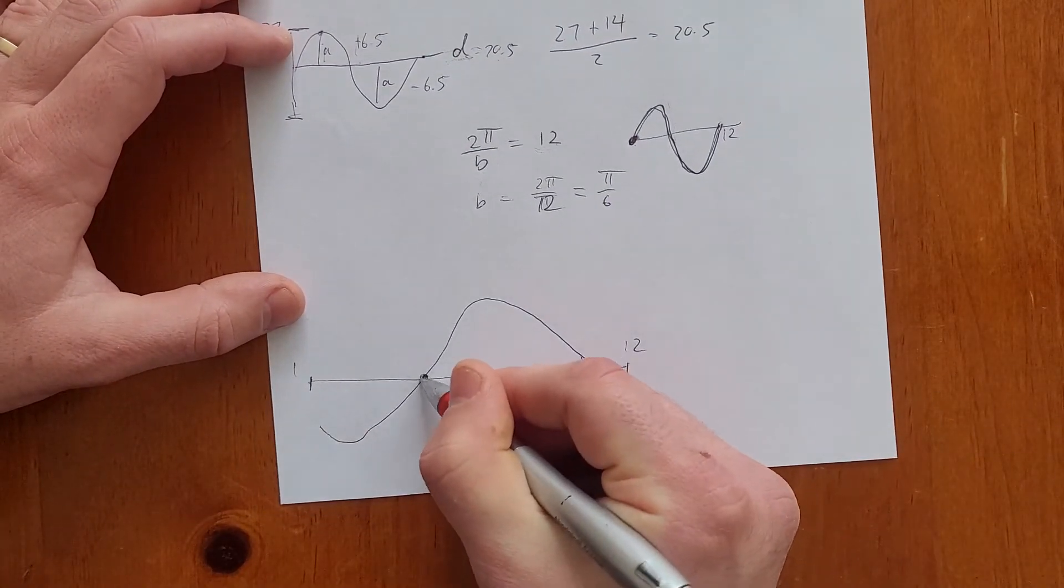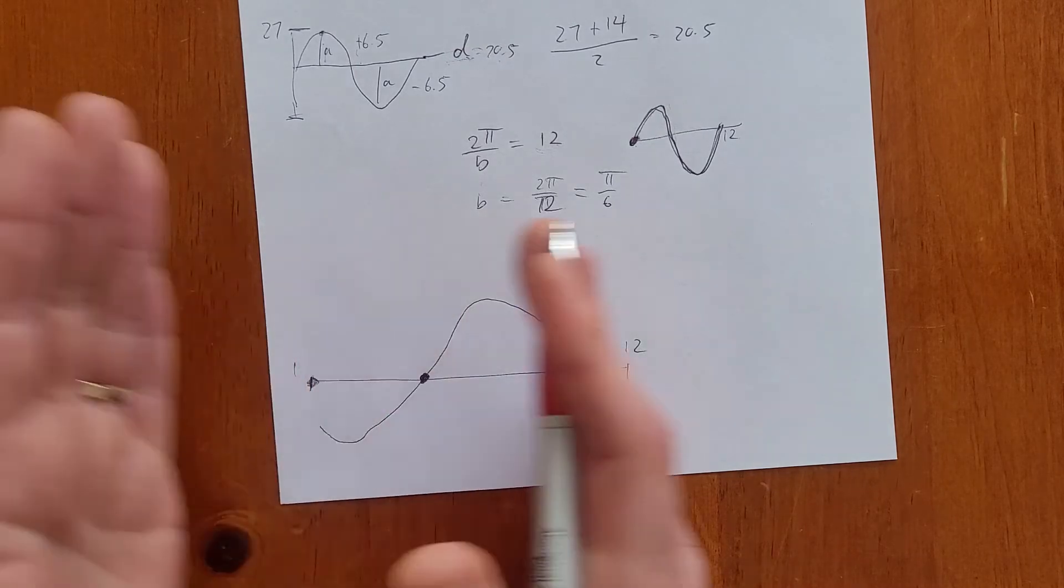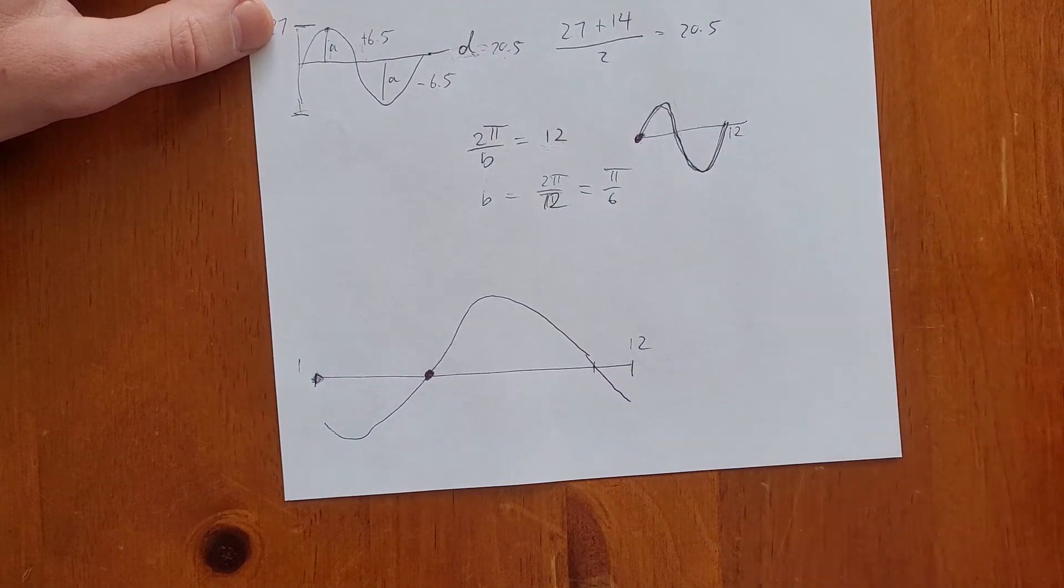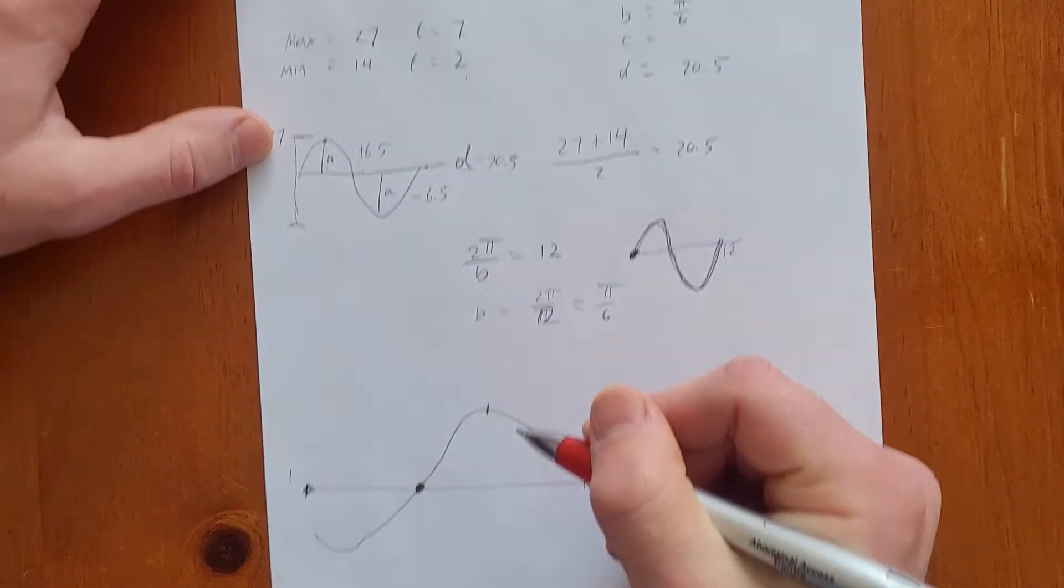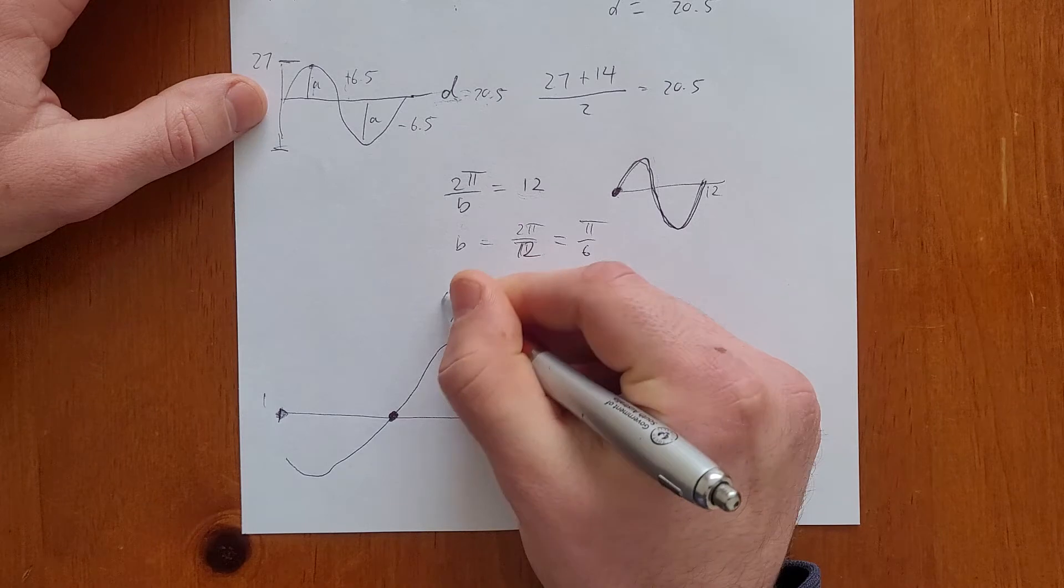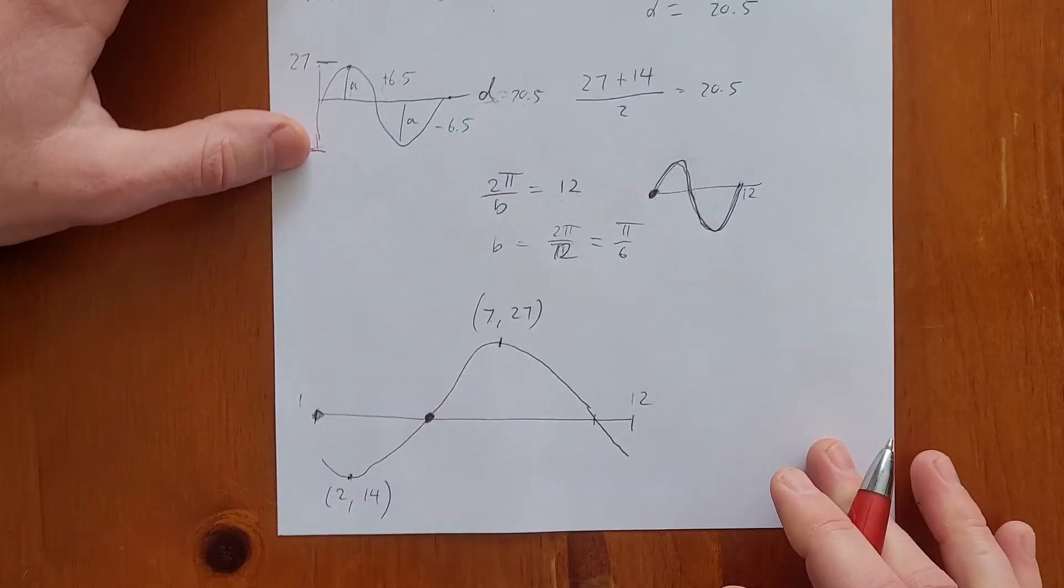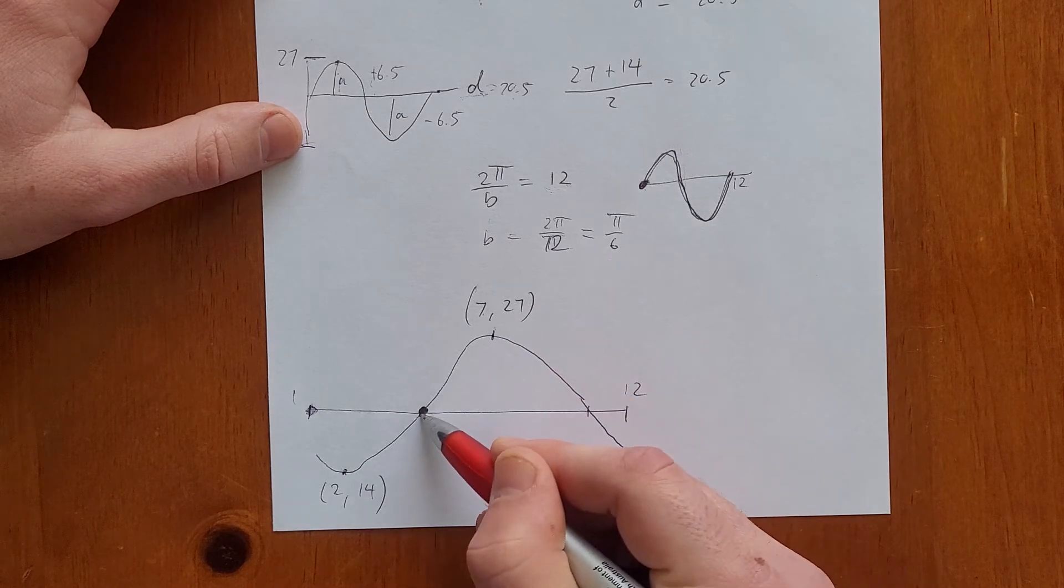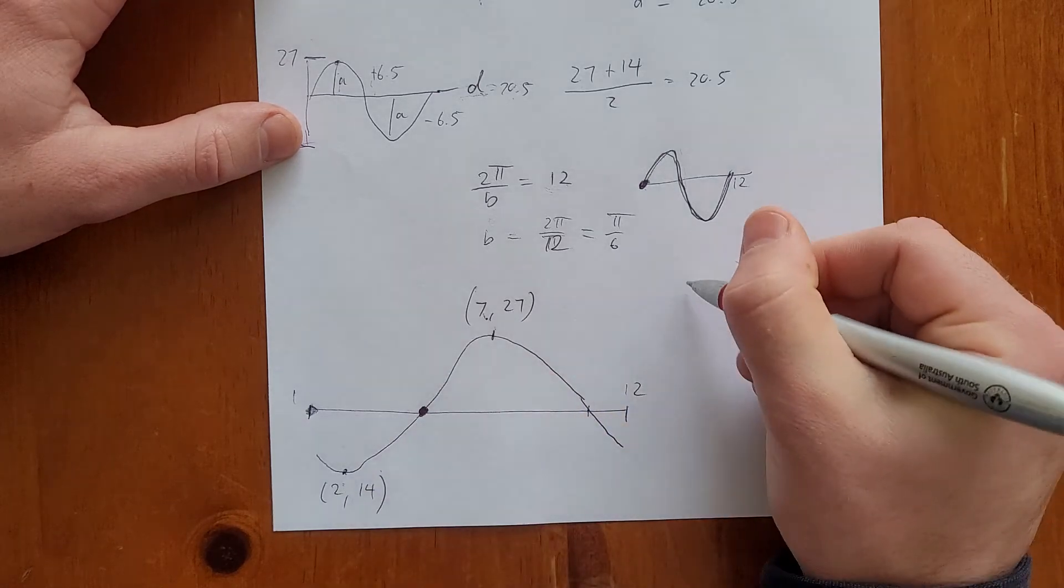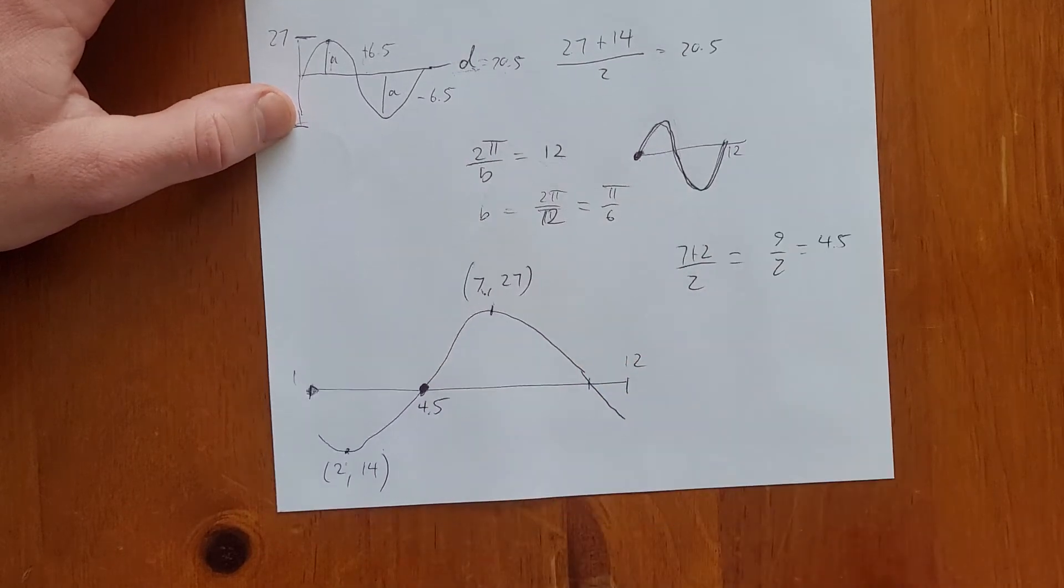Here's time is 12, here's time is 1. And so we want to say, well, how much have we shifted the sine function to the right? Normally the sine function starts here, but we've shifted it to the right. So what we do know is that the maximum temperature is 27 degrees and occurs when time is 7. And the minimum temperature occurs when time is 2 and is 14 degrees. And so that means the time value of this point is going to be exactly halfway between the maximum and halfway between the minimum. So if I go 7 plus 2 divided by 2, that's 9 on 2, which is 4.5.